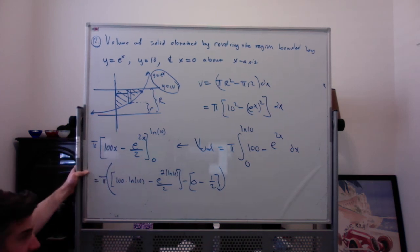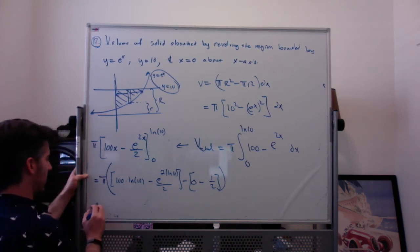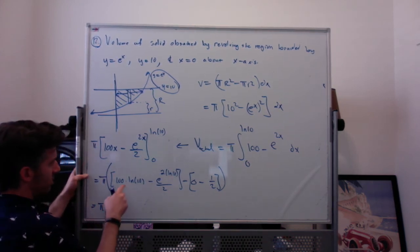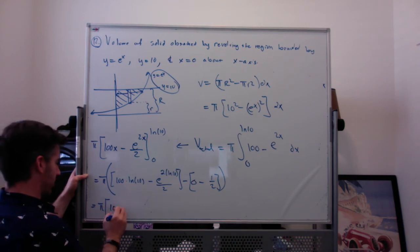And I'd probably do something like that if I was short on time. If I'm not short on time, we've got pi times 100 times natural log of 10.